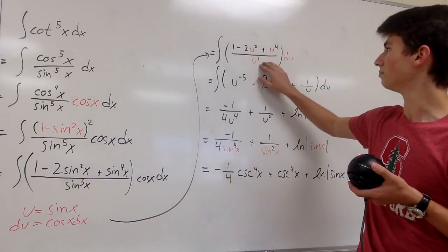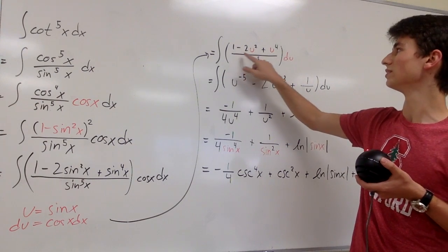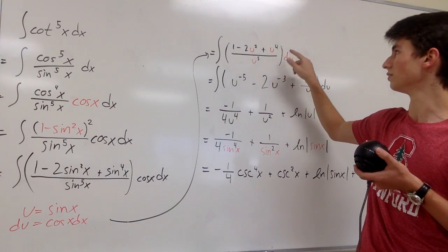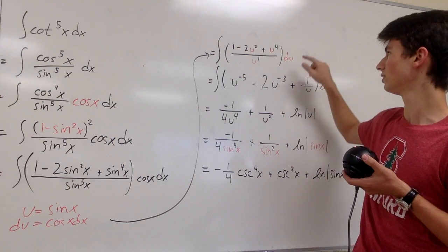So if we plug it in back up here, we get one minus two u squared plus u to the fourth all over u to the fifth du.